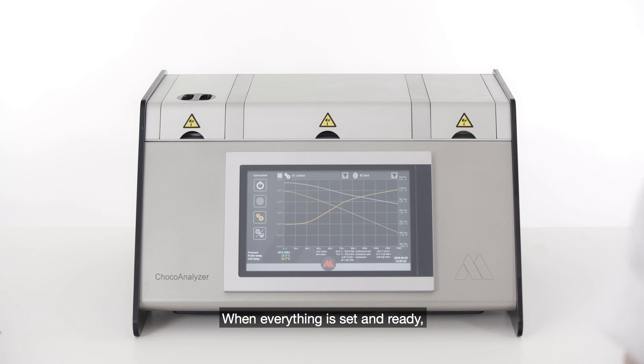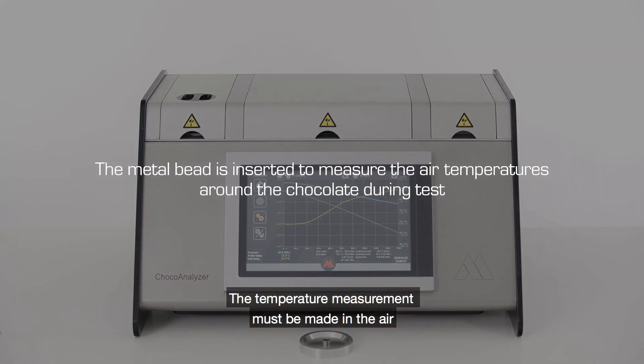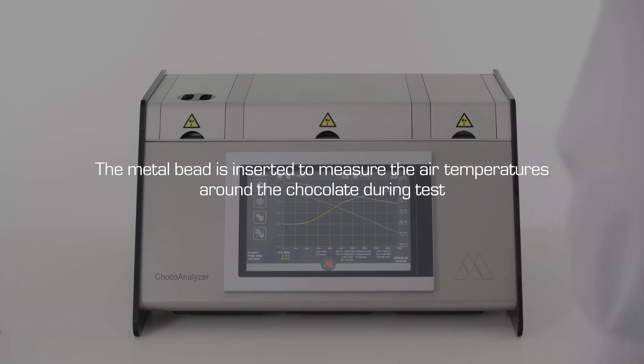When everything is set and ready, follow the instructions for app activation and filling the cup. For a contraction test, a metal bead in the cup is required. The temperature measurement must be made in air because the data processing is made by the ideal gas equation.